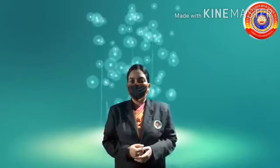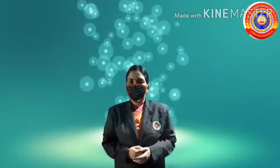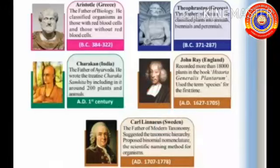Let's start our class. Let's observe the pictures — these are some scientists who have made valuable contributions in the history of taxonomy. First, Aristotle. He was born in Greece. He is known as the father of biology. He classified organisms as those with red blood cells and those without red blood cells.